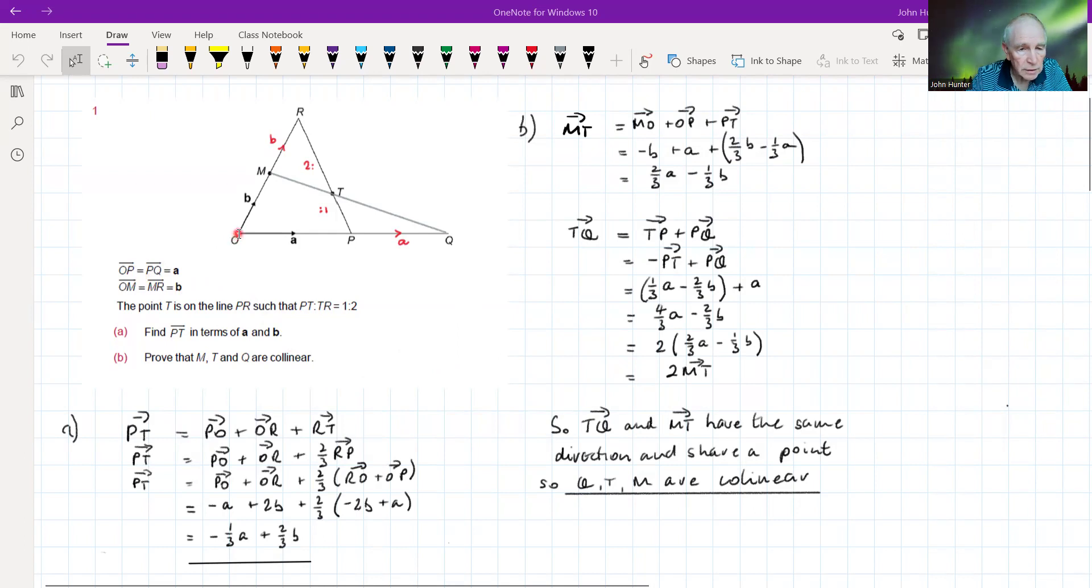So it's saying that OP and PQ are both vector A. OM and MR are B. So OM is B direction, and MR is B. And also the point T is on the line PR, such that PT to TR equals 1 to 2. So I've put the ratios in there, 1 to 2. I was using that little bit of notation. So that's it. The first part of the question is asking us to find PT in terms of A and B.